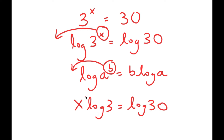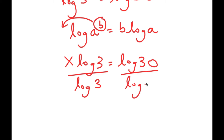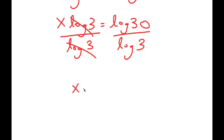Now that x is an actual term, I can solve for it by dividing both sides by log 3. So these cancel out and I get x equals log 30 over log 3.